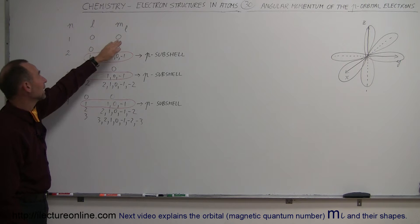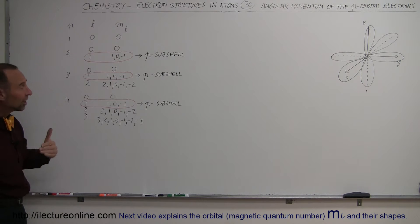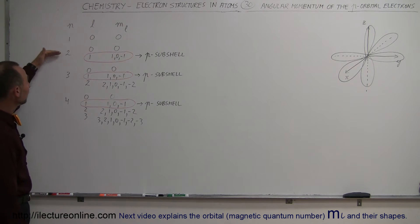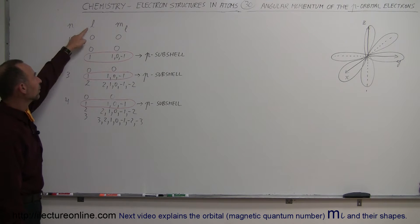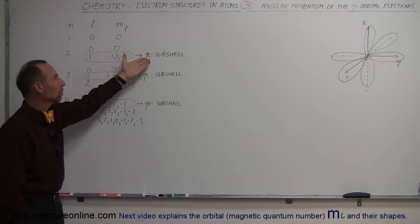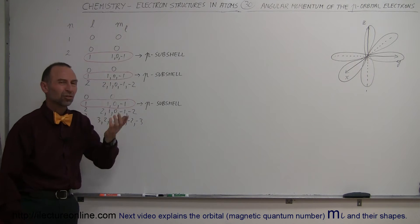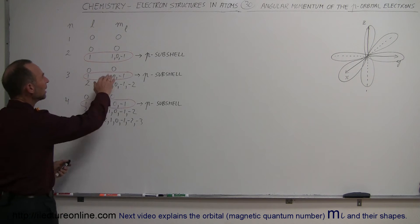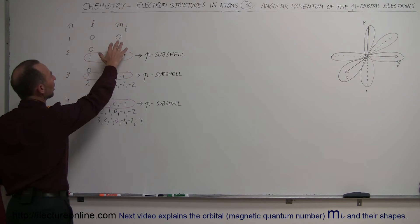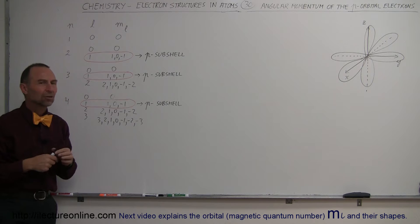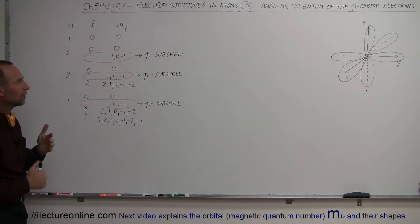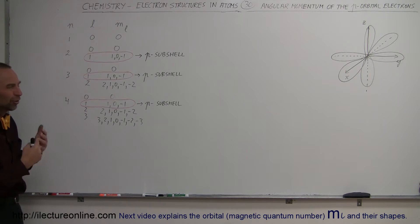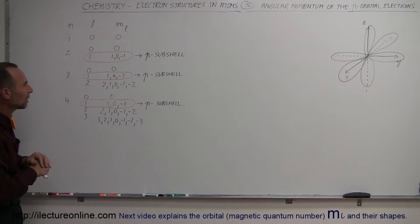So there are no p-orbitals found in the innermost energy level. In the second energy level, we find both s-orbitals and p-orbitals. L equals 1 is associated with the p-sub-shells, and in it we'll find 3 p-orbitals, partially due to the fact that there are different orientations of the angular momentum within those orbitals, and so we can associate that with different p-orbitals.